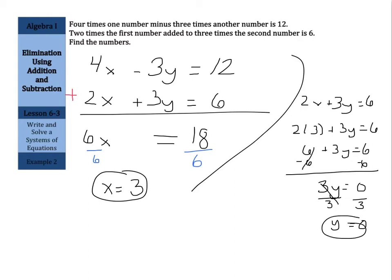So y is, well, that was not a good circle there. Y, 0 divided by 3 is 0. That's better. And if we write this as an order of pair, we get 3, 0. So our numbers are 3 and 0.